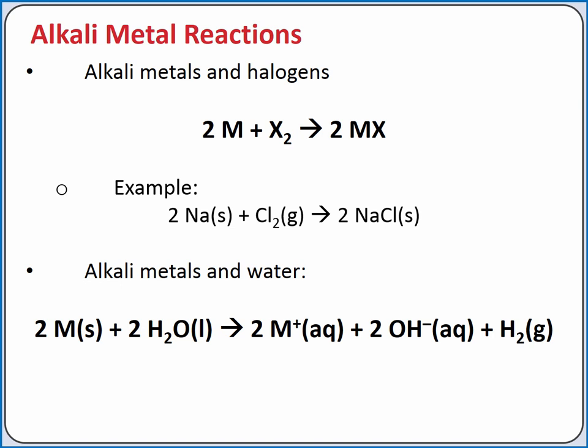Alkali metals have characteristic reactions with water, which produce hydrogen gas and hydroxide. In this reaction, the two alkali metal atoms are donating one electron each to the H-plus from two water molecules, thus making hydrogen gas.